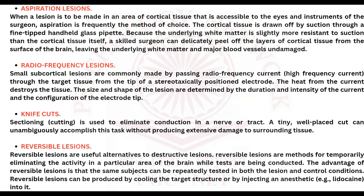Aspiration is frequently the method of choice. The cortical tissue is drawn off by suction through a fine-tipped handheld glass pipette. Because the underlying white matter is slightly more resistant to suction than the cortical tissue itself, a skilled surgeon can delicately peel off the layers of cortical tissue from the surface of the brain. The key point to remember is that aspiration lesions are made in areas of cortical tissue.